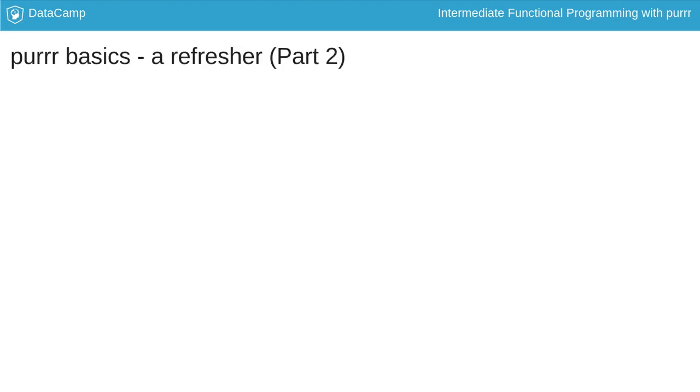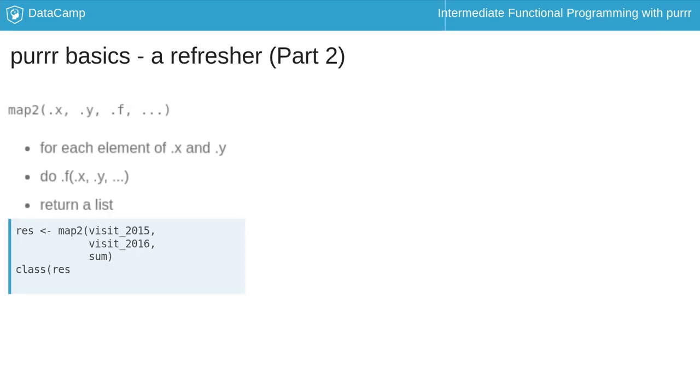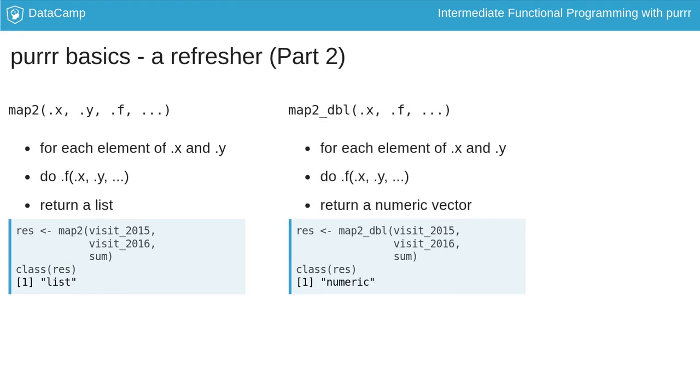Let's now imagine we want to add visits from 2015 and 2016. To do this, I can use the map2 function to get a list and its counterpart map2_dbl to get a vector of numeric.